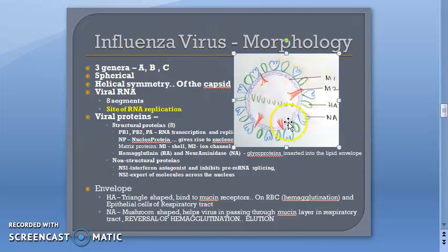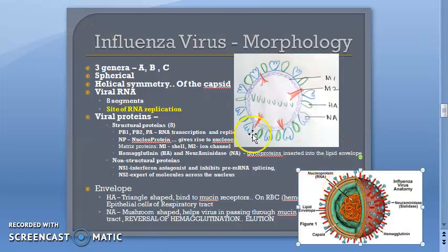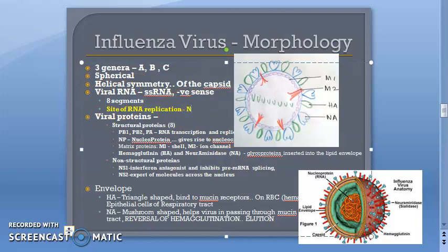Regarding morphology, the virus is spherical with helical symmetry of the capsid. The RNA is single-stranded, negative-sense, and has eight segments. The site of replication of the RNA is the nucleus.